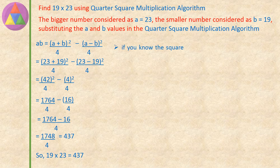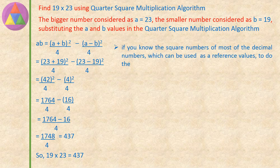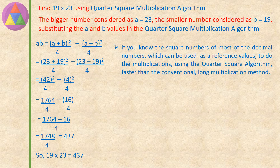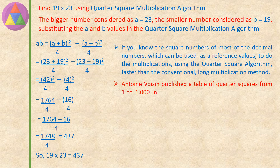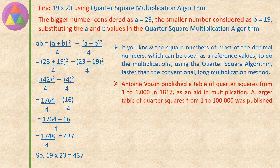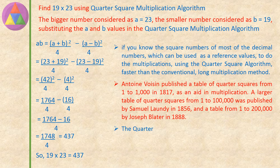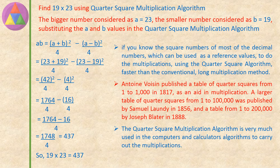If you know the square numbers of most decimal numbers, which can be used as reference values to do multiplications using the quarter square algorithm, it is faster than the conventional long multiplication method. Antoine Voison published a table of quarter squares from 1 to 1000 in 1817 as an aid in multiplication. A larger table from 1 to 100,000 was published by Samuel Landy in 1856, and a table from 1 to 200,000 by Joseph Blatter in 1888. The quarter square multiplication algorithm is widely used in computers and calculator algorithms to carry out multiplications.